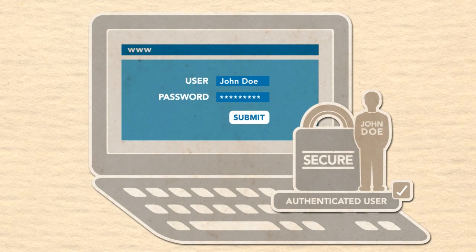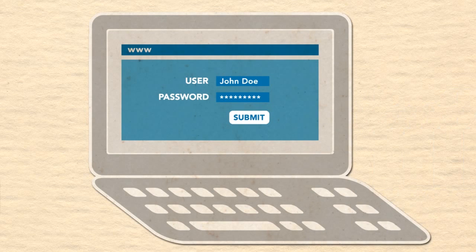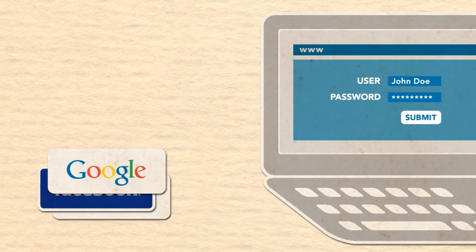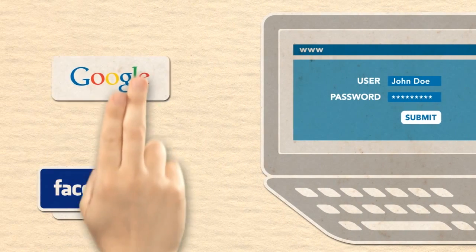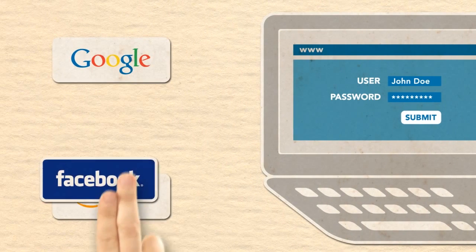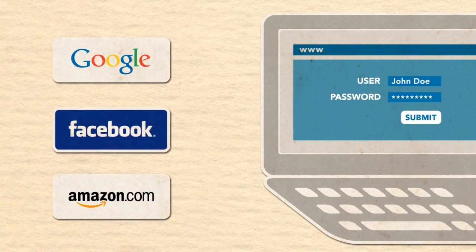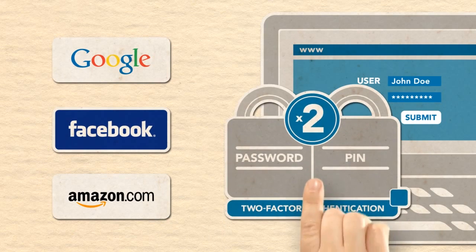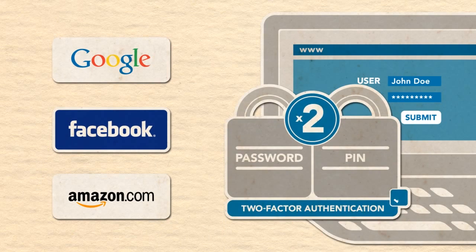Luckily, there is a simple, inexpensive, and effective solution for strong user authentication. The internet giants like Google, Facebook, and Amazon are using it to protect their own user accounts. It's called two-factor authentication.